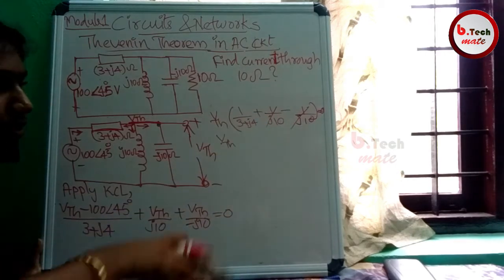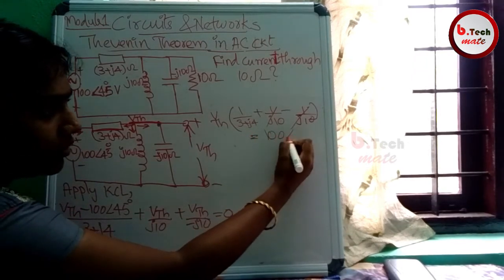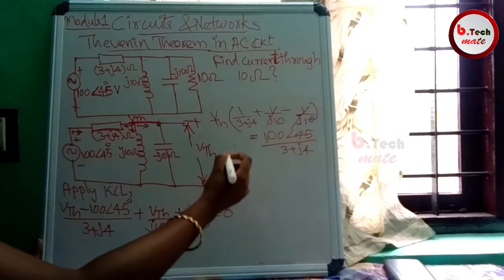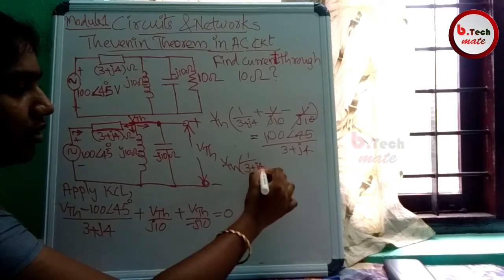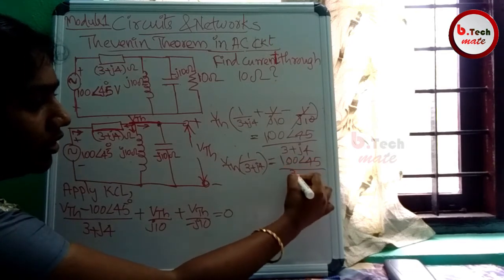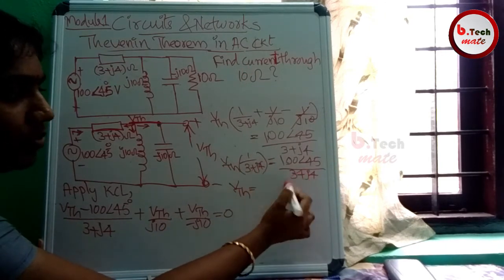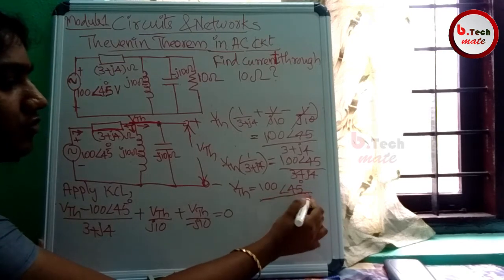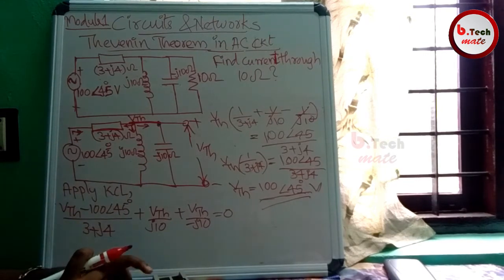Solving: minus 1 by J10 equals zero, equals 100 angle 45 degrees divided by (3 plus J10). This gives us the value of VTH. Next step: set up the ZTH circuit. This is VTH.